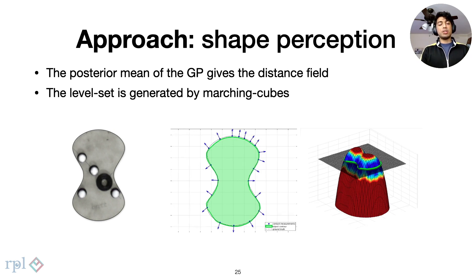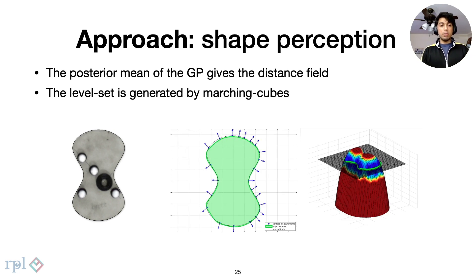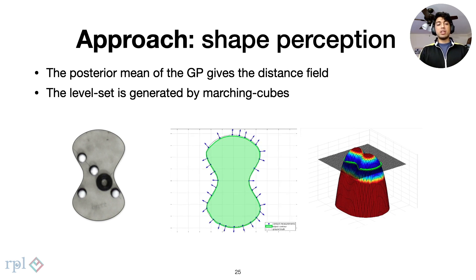The equations have been omitted here for brevity. Below, we see a simulated reconstruction of the butter shape from the MIT push dataset.